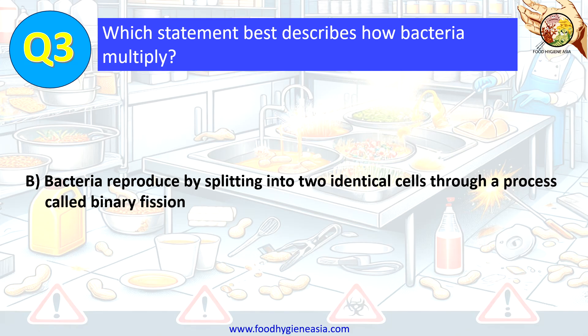The correct answer is B. Bacteria reproduce by splitting into two identical cells through a process called binary fission.